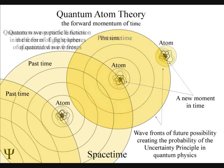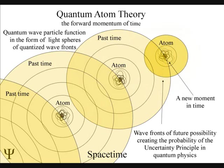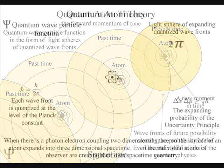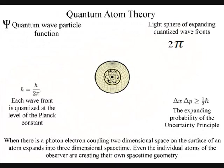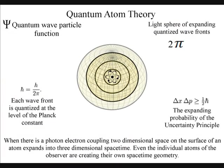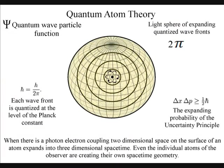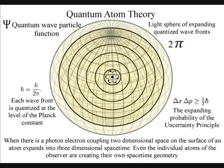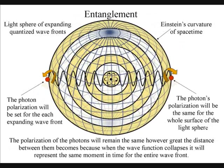Light always takes the simplest and most efficient path, expanding out in all directions, forming light spheres. The polarization of the light will be the same for the entire surface of the light sphere, creating quantum entanglement and the symmetry and geometry of space-time.